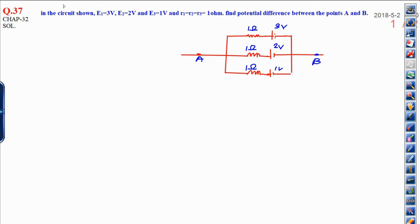Dear students, today I am going to discuss question number 37 from H.T. Verma chapter number 32. This is a very important question which is based on the combination of cells.